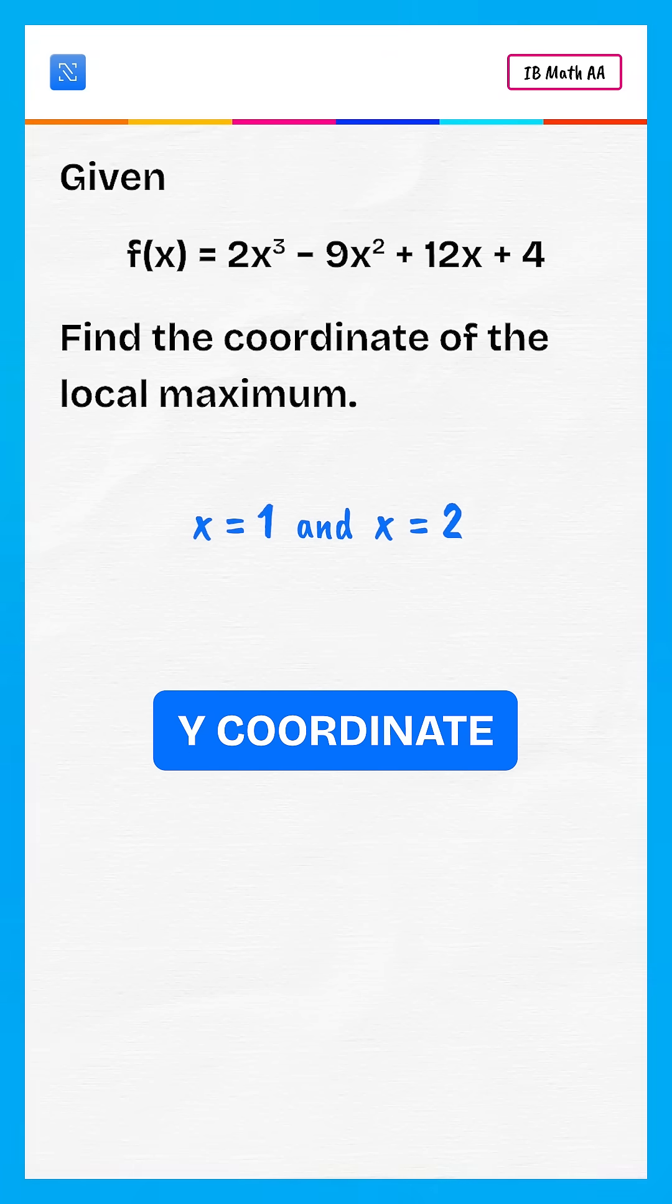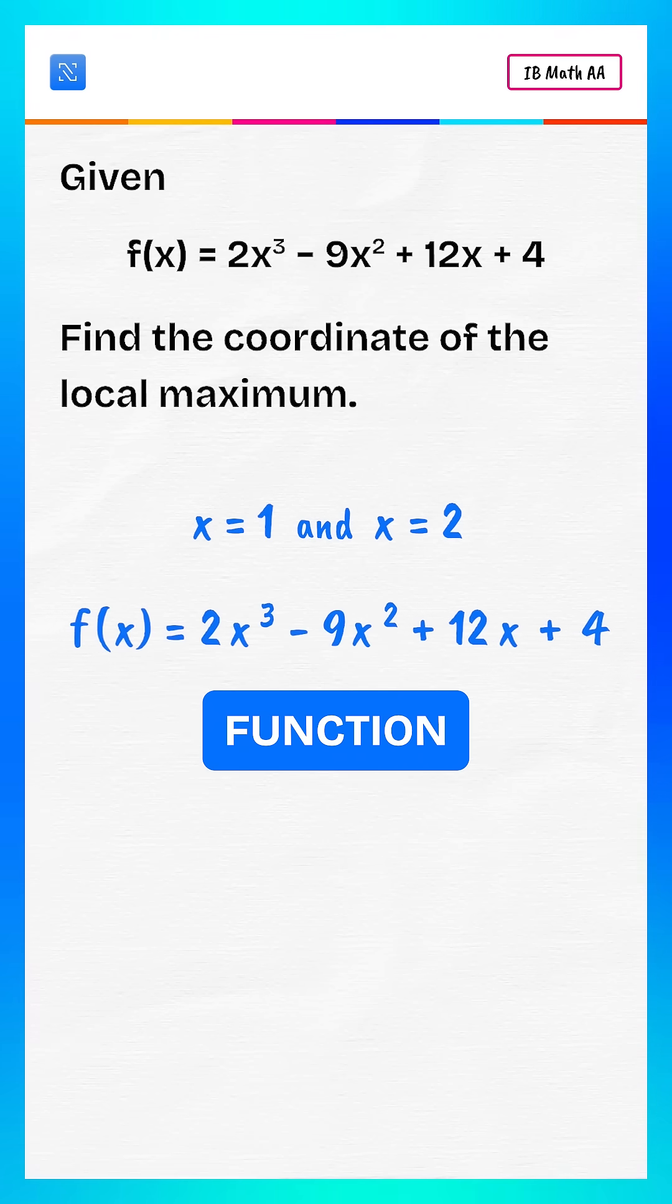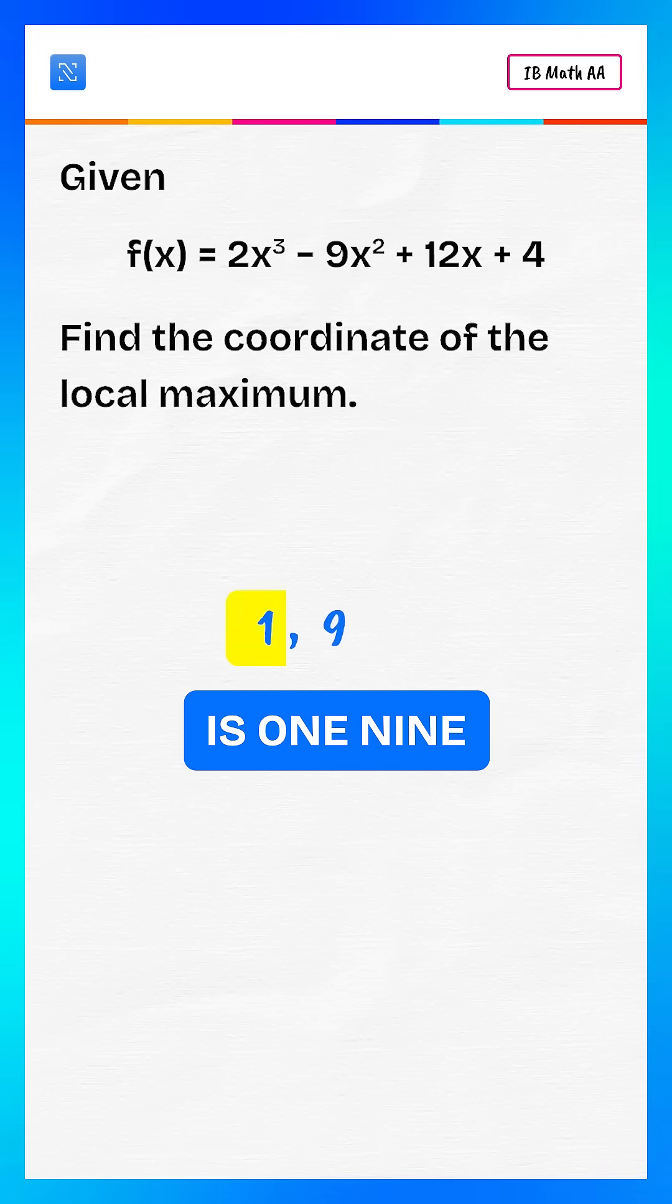Now we find the y coordinate. Substitute x equals 1 into the original function, which gives us 9. So the coordinate of the local maximum is 1, 9.